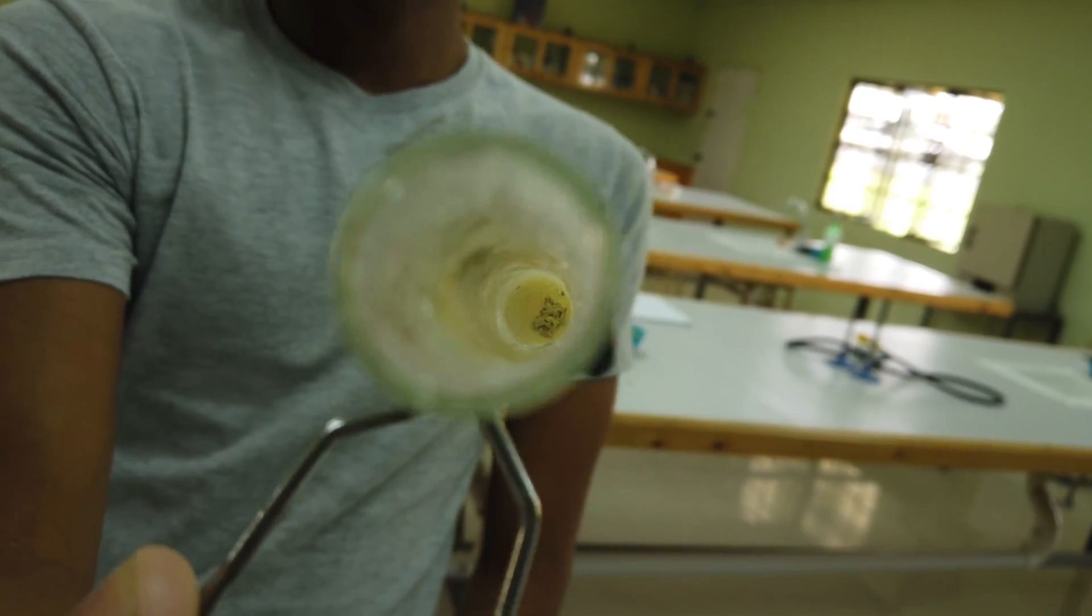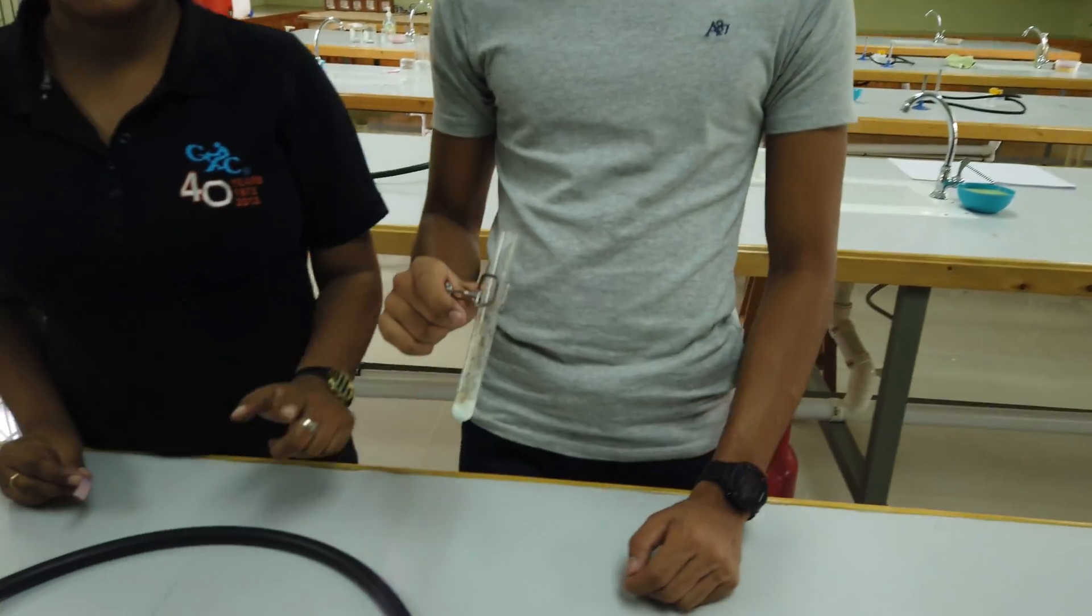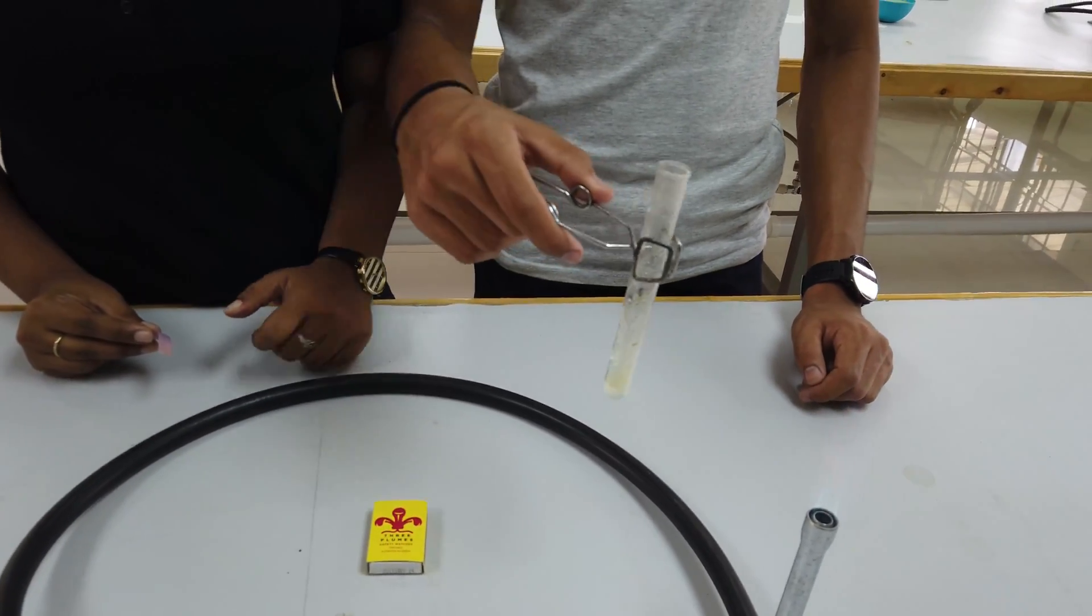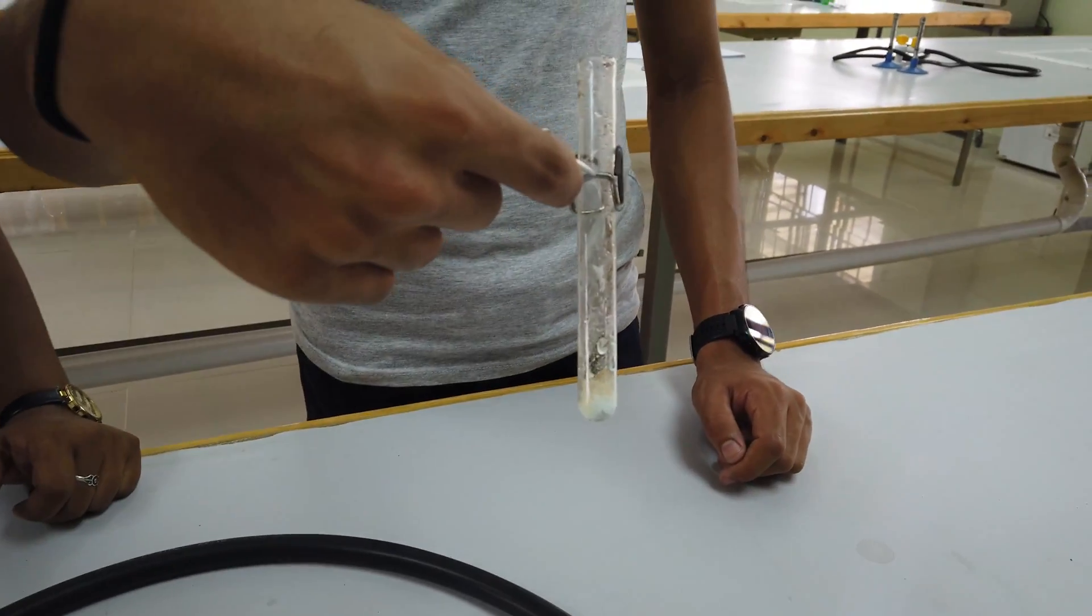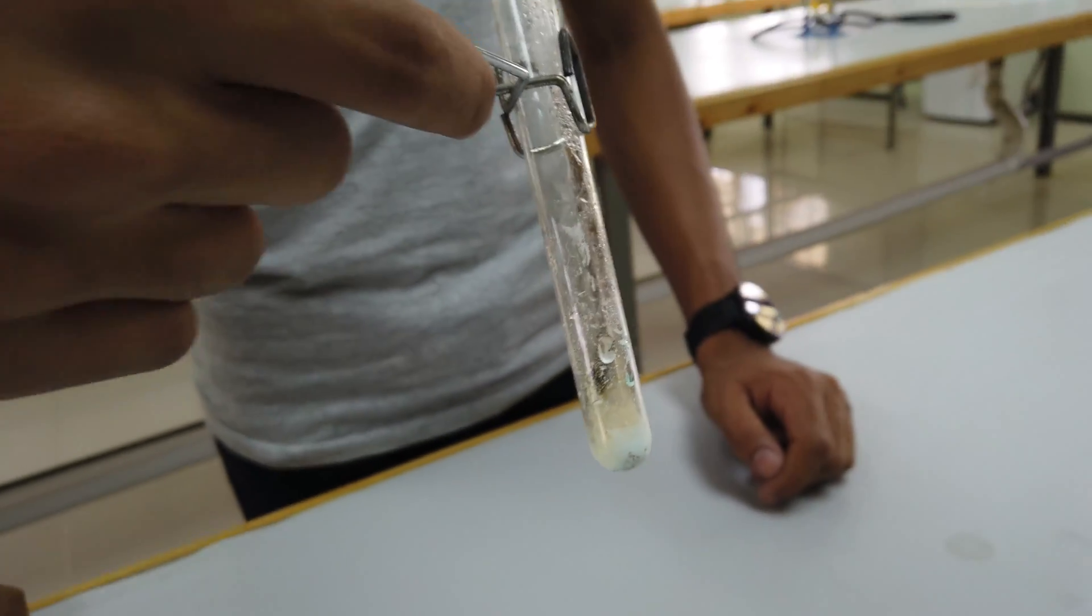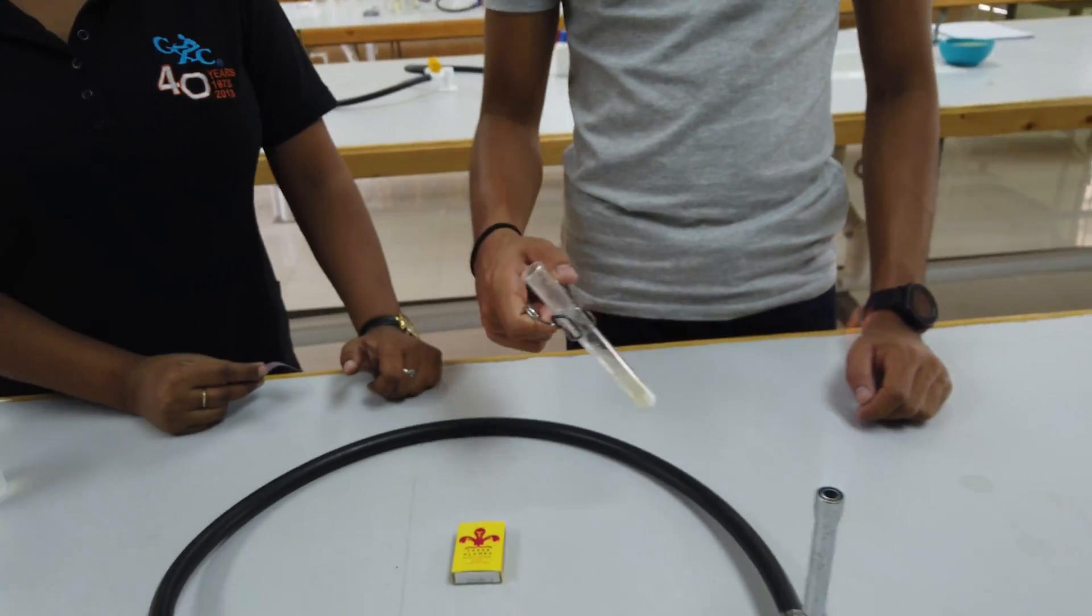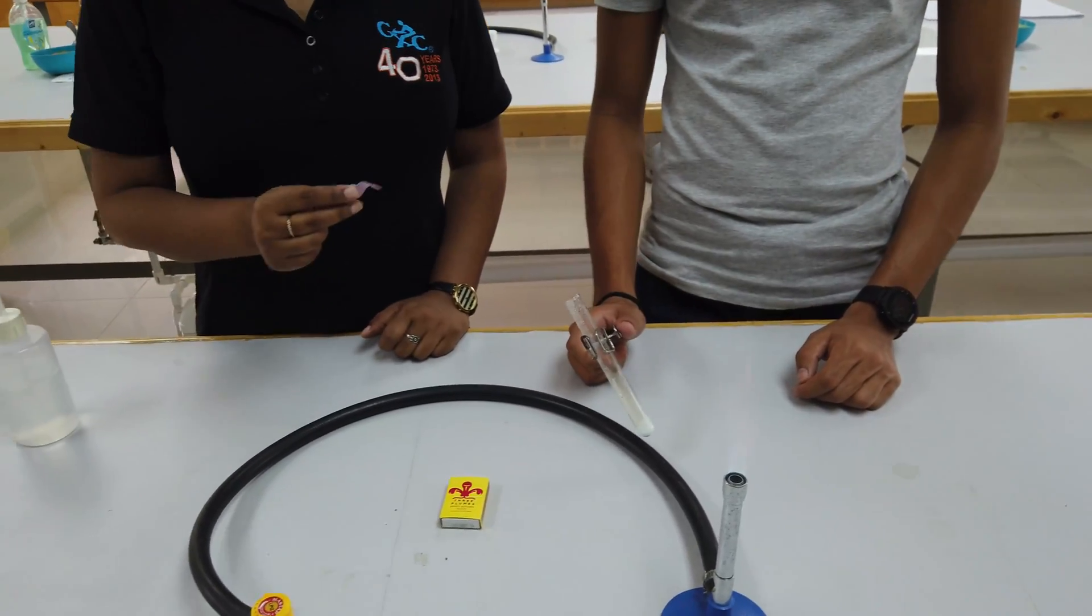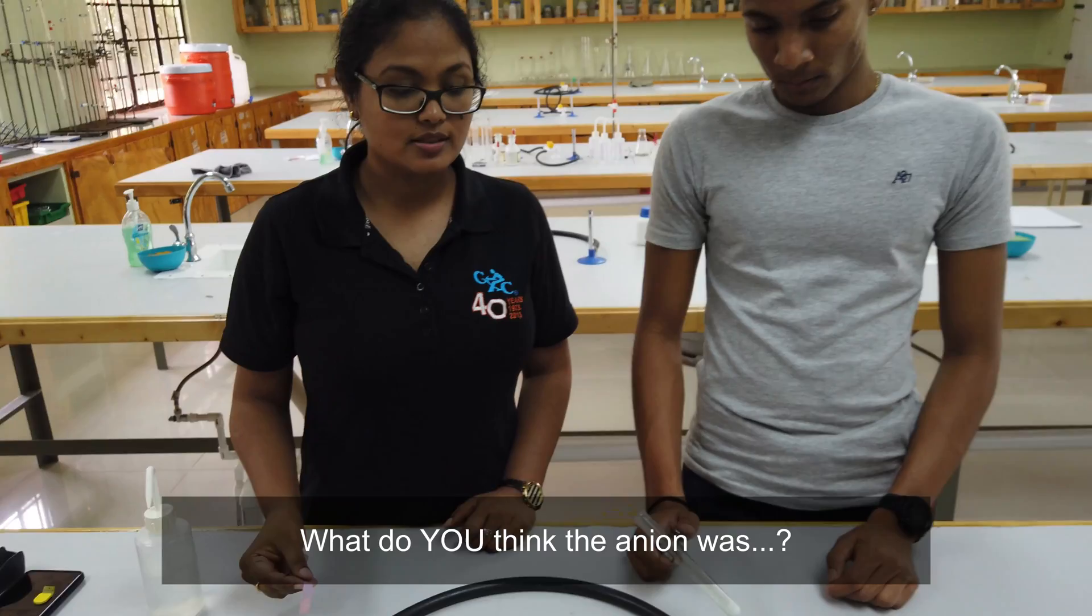You've seen it - there's a stain on the test tube. We're going to put that in our observations as well. Next time I see you, we're going to talk about what anion was present in salt X.